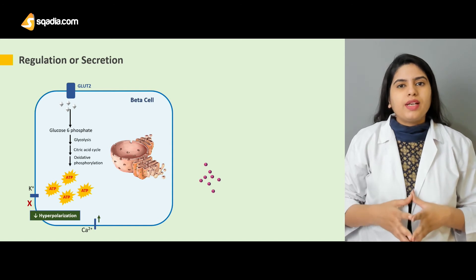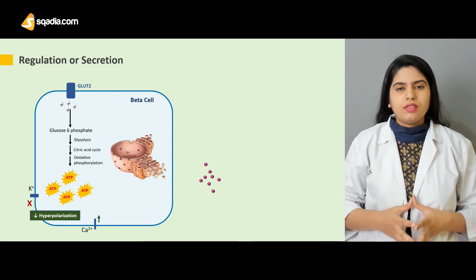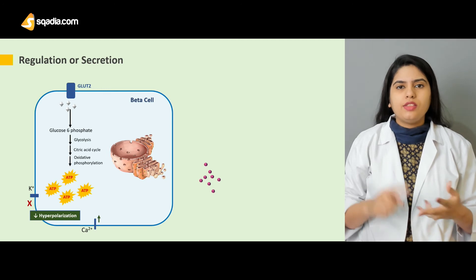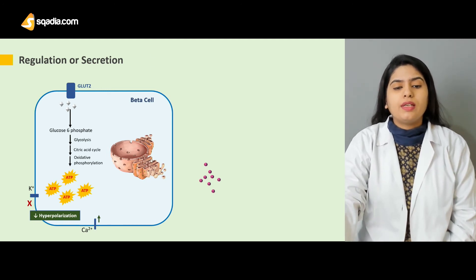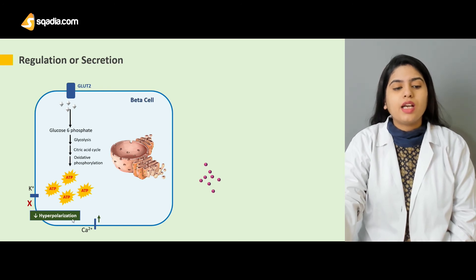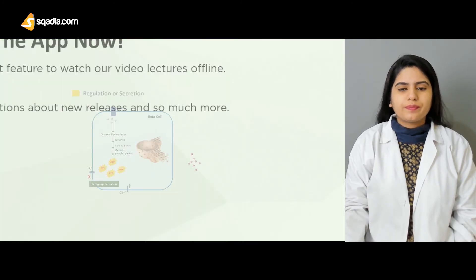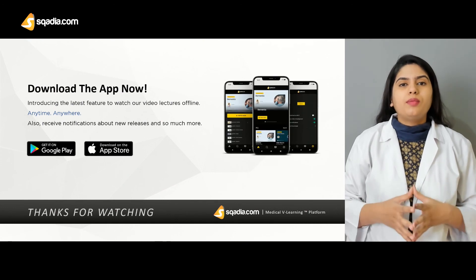To summarize: insulin is synthesized in the beta cells of the pancreas. There are three steps of insulin synthesis — the formation of pre-pro-insulin, pro-insulin, and mature insulin. Pre-pro-insulin is formed in the ribosomes, then it enters the endoplasmic reticulum where pro-insulin is formed, and then mature insulin is formed in the Golgi apparatus. Glucose produces ATP, causes a decrease in hyperpolarization and entry of calcium inside the cell, which then causes the release of insulin granules into the blood.